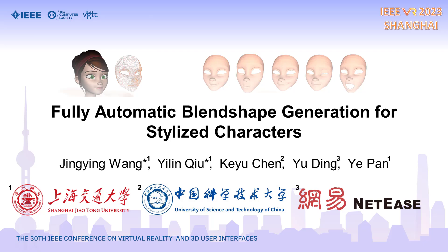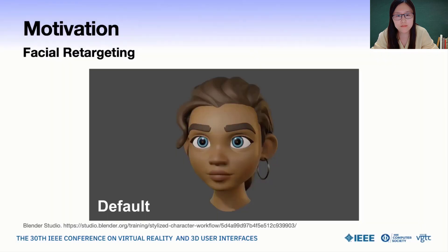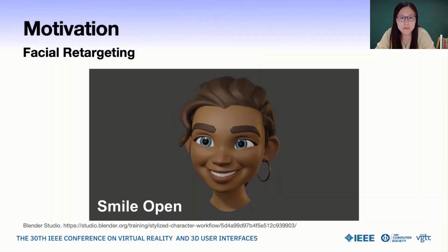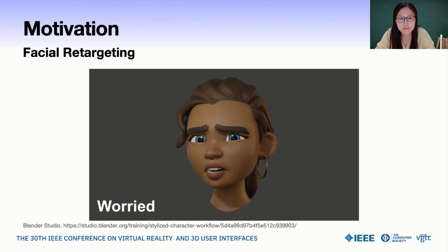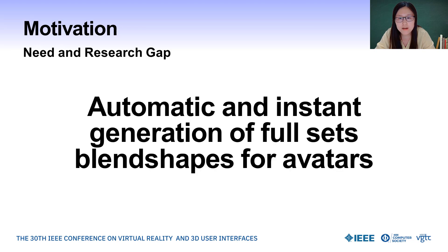We present a fully automatic blend shape generation method for stylized characters. Avatars are one of the most important elements in the virtual environment. In the industry, we often use blend shapes to drive the avatar's facial expression. Each blend shape represents a single action unit of the face with respect to the neutral face, such as left eye blink, jaw open, and so on. However, generating blend shapes for avatars requires a significant amount of expertise and human labor.